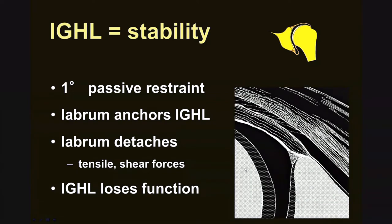This depicts the humeral head and the glenoid, the cartilage, and then the IGL coming to attach partially to the labrum and partially to the adjacent bone and periosteum. We'll see later in this talk how when the labrum tears off the underlying cartilage and bone, it can strip along the medial glenoid neck and form characteristic lesions such as the ALPSA lesion.